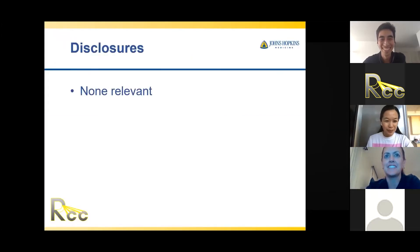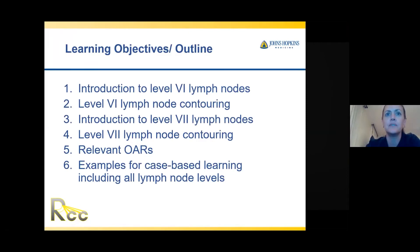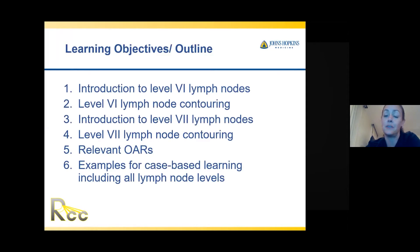I don't have any disclosures relevant to this. I was going to start with the level 6 lymph nodes, do an introduction, and then run through the contouring. I'm going to go back and forth between the PowerPoint and the RTOG contouring head and neck atlas, which does a nice job with level 6 and 7 nodes, then discuss the relevant OARs, and then do the case-based learning.